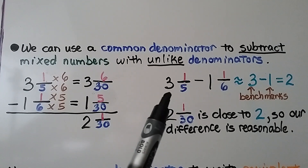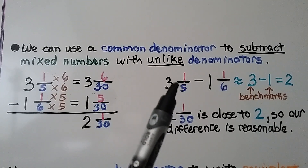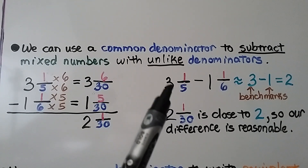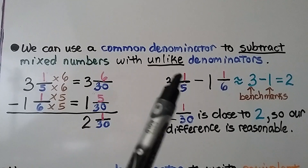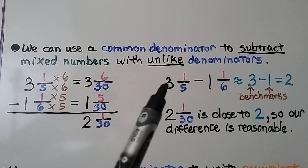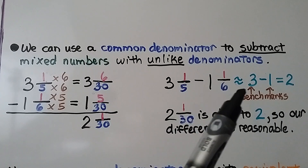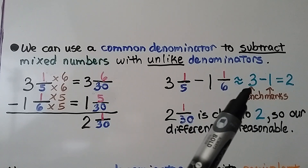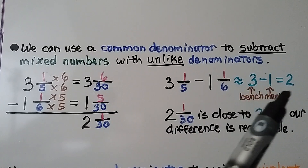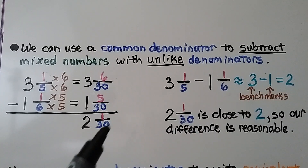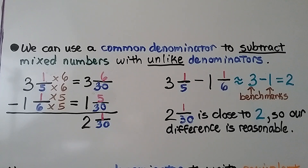If we use 3 as a benchmark for 3 and 1 fifth, because 1 fifth is very small, we can estimate this as 3. We can estimate 1 and 1 sixth as 1. So 3 minus 1 equals 2, and 2 and 1 thirtieth is very close to 2. Our difference is reasonable.